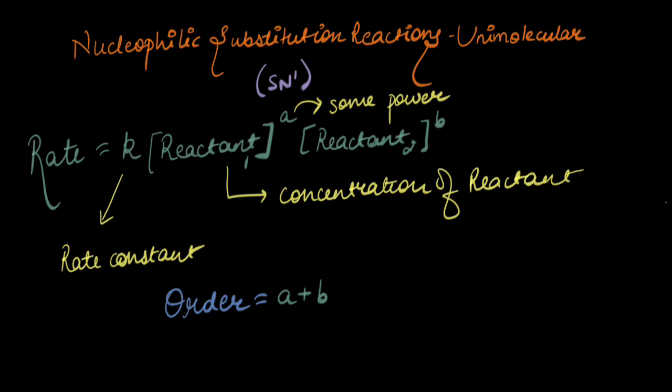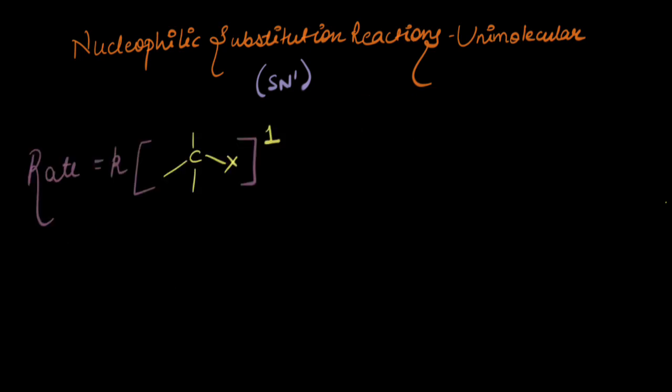Let's now apply this concept to our mechanism of SN1 reaction. Since the slowest step is the rate determining step, the rate of the reaction would be directly proportional to the concentration of the substrate only, since the nucleophile has not attacked in the first step. And it is raised to the power 1 which is its stoichiometric coefficient. What would be the order of this reaction? The order of this reaction is 1.